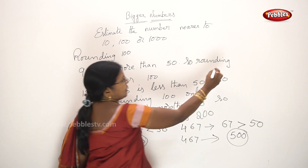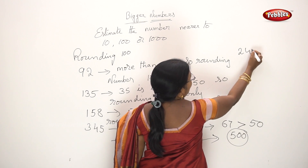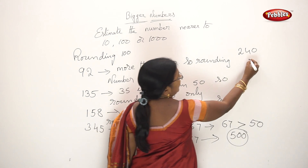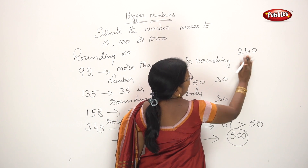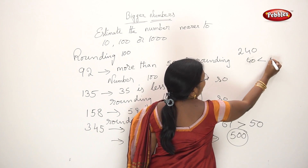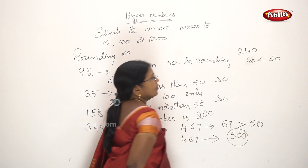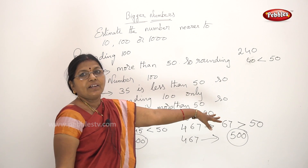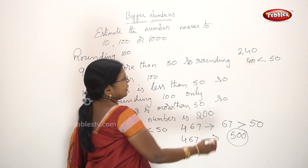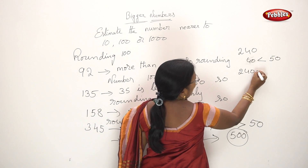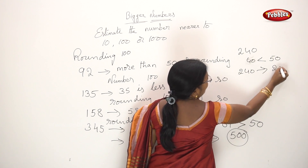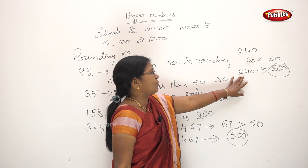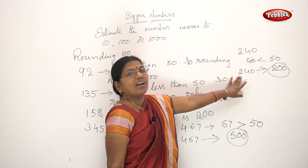One more example: 240. The last two digits are 40. 40 is less than 50. When the digits are less than 50, we do not add to the hundreds place. So the rounding number for 240 is 200 only. Same hundreds value stays — no addition, no subtraction.